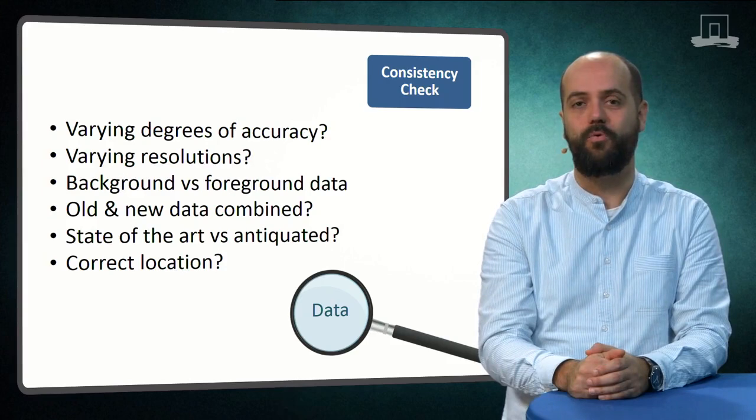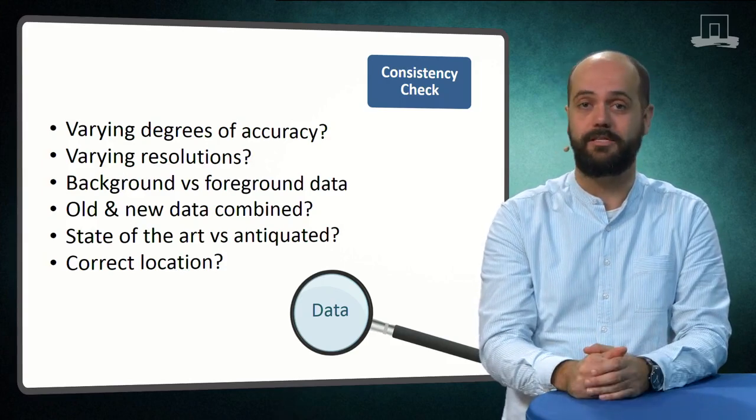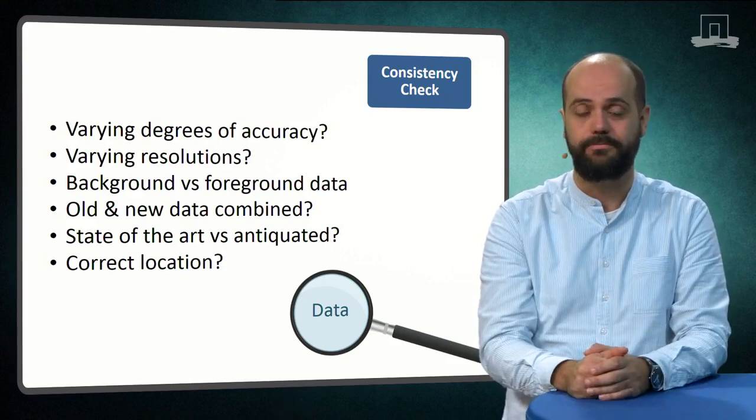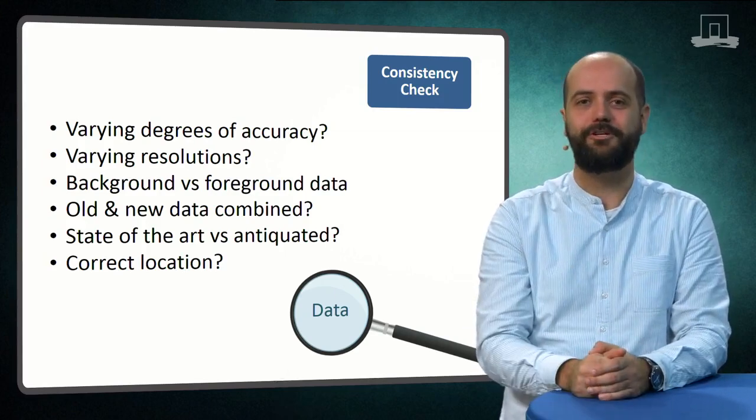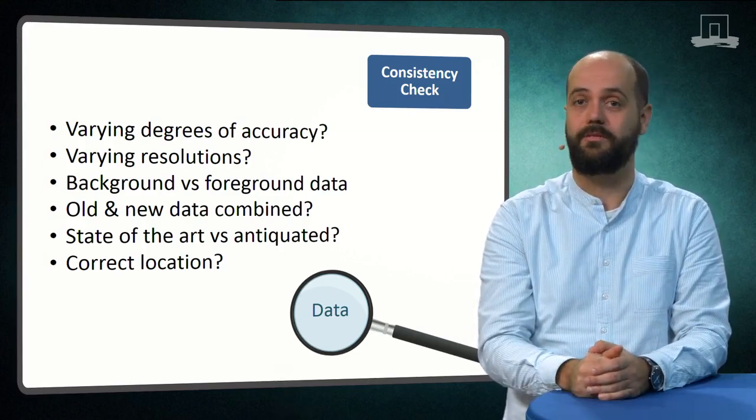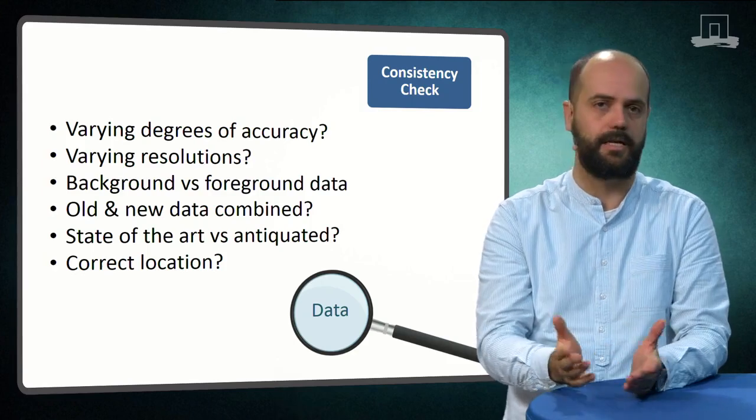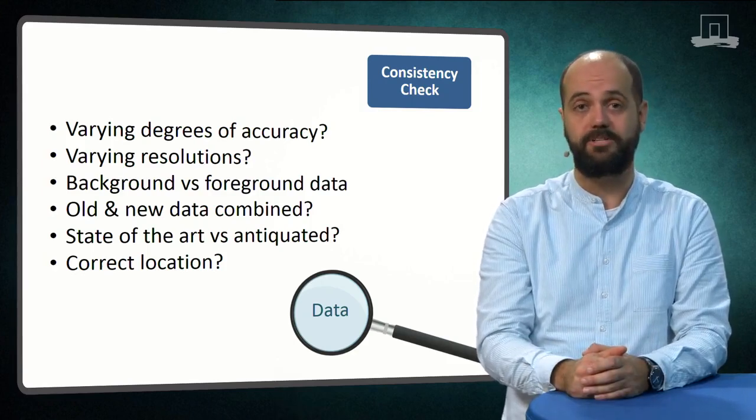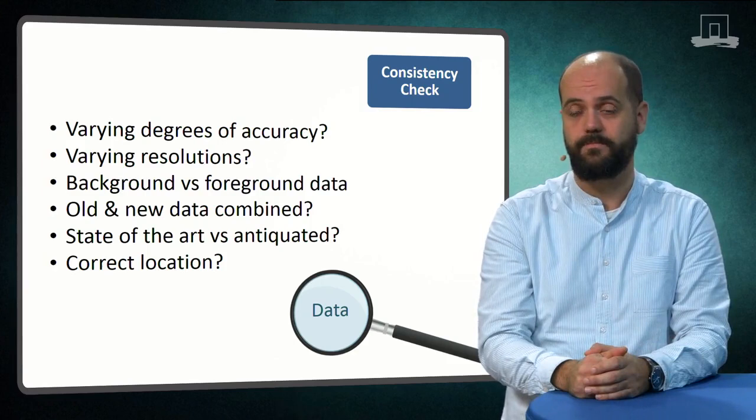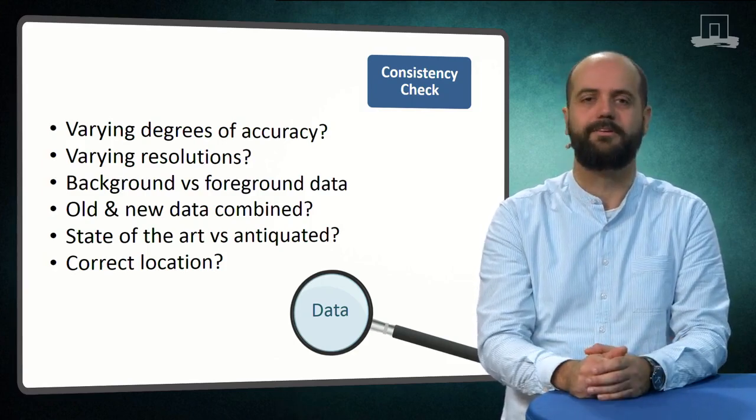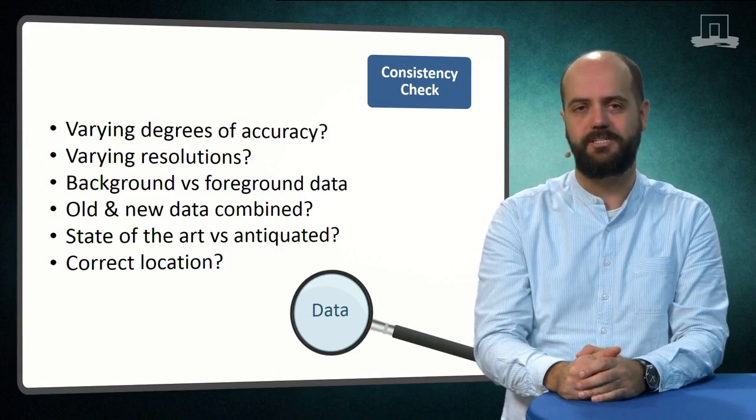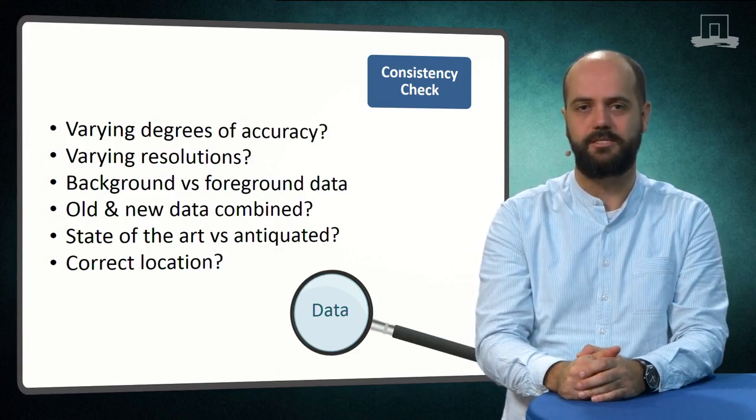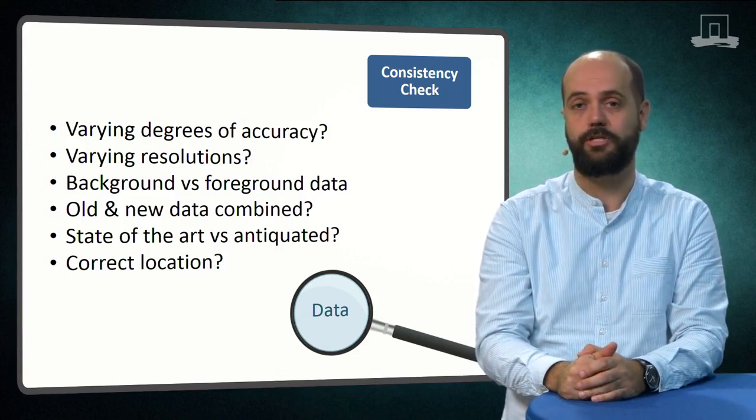Have you included unit process data based on the state-of-the-art system like the latest technology to represent an antiquated system or vice versa? And finally, have you used region-specific data to represent processes that are not actually occurring in those regions but somewhere else?